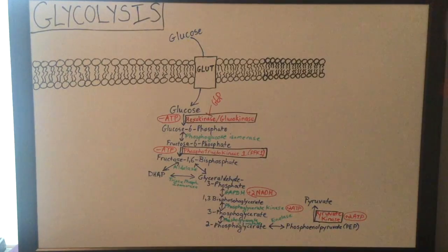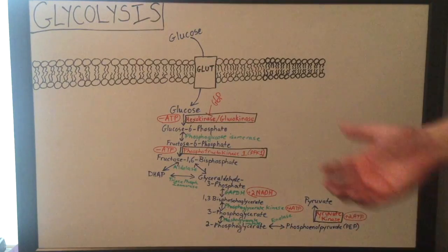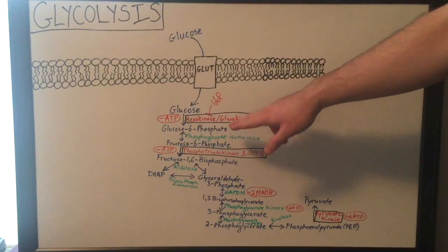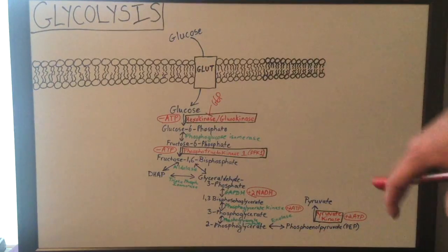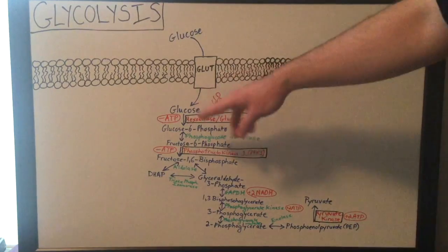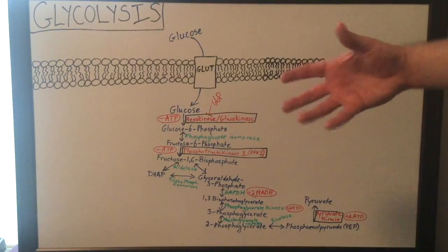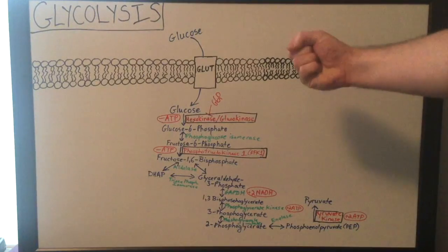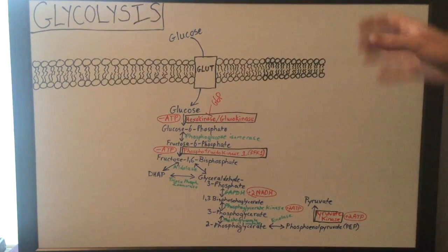So nevertheless, once the glucose does enter the cell, it gets phosphorylated by hexokinase, which actually utilizes 1 ATP in that step, and that forms glucose 6-phosphate. The whole purpose of phosphorylating glucose to glucose 6-phosphate is to actually hold glucose in the cell so that it doesn't go back out the glucose transporter, retaining that glucose so the cell can actually use it.